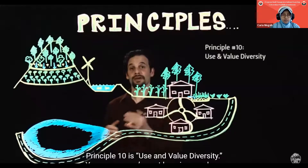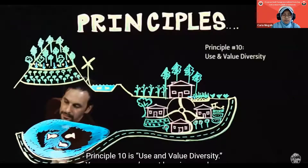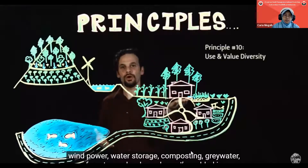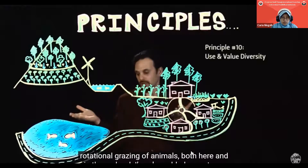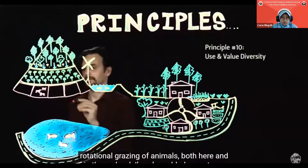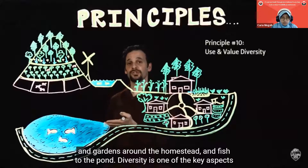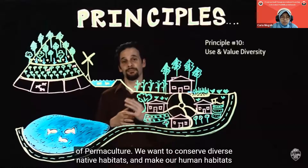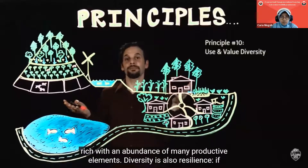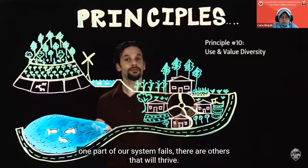Principle ten is use and value diversity. We've got housing, gardens, wind power, water storage, composting, greywater, forestry, orchards, rotational grazing of animals, more trees and gardens around the homestead, and fish in the pond. Diversity is one of the key aspects of permaculture — we want to conserve diverse native habitats and make our human habitats rich with an abundance of many productive elements. Diversity is also resilience: if one part of our system fails, there are others that will thrive.